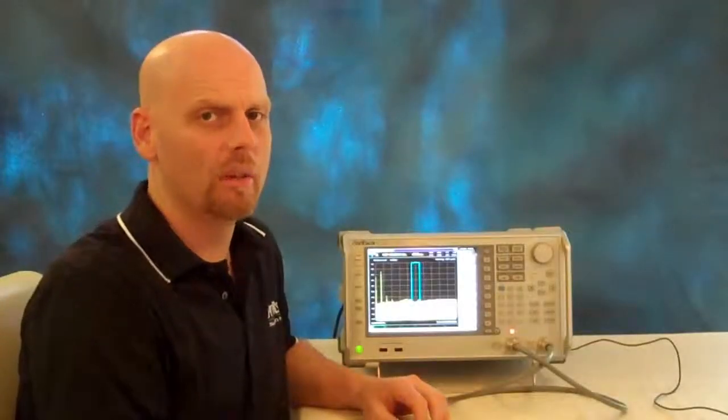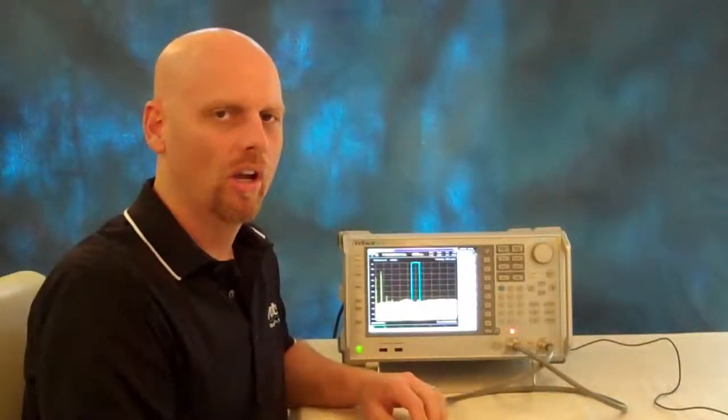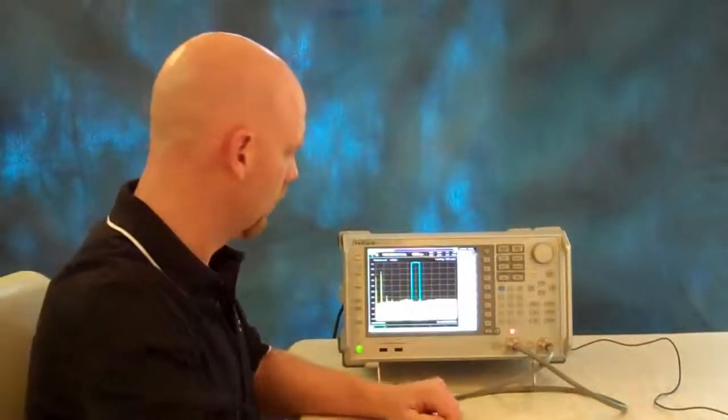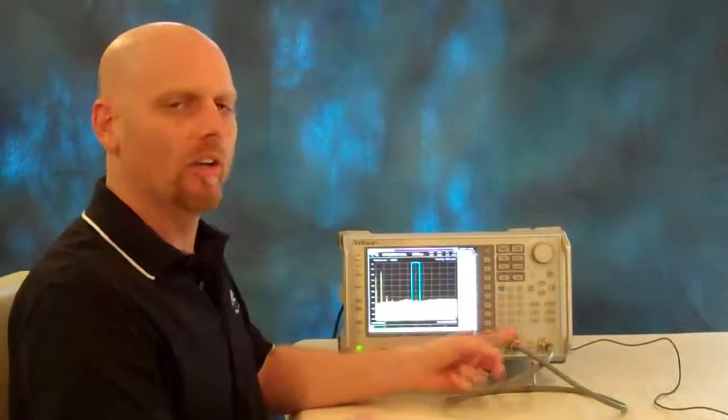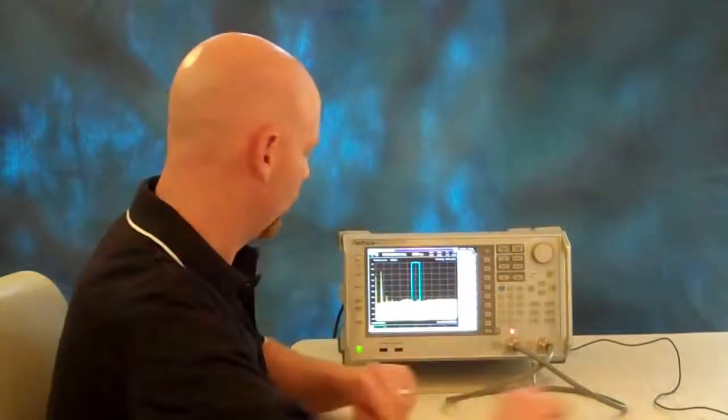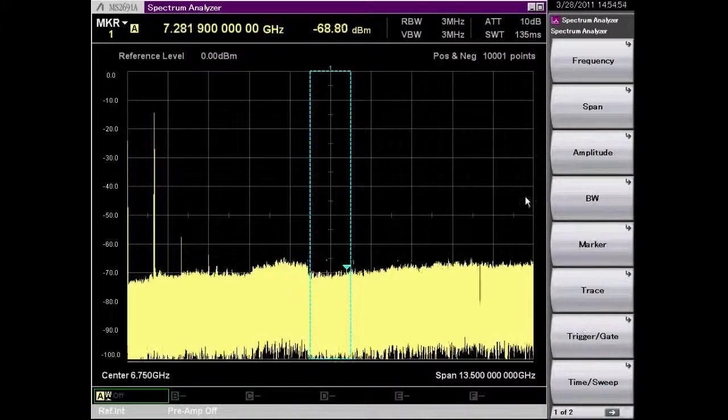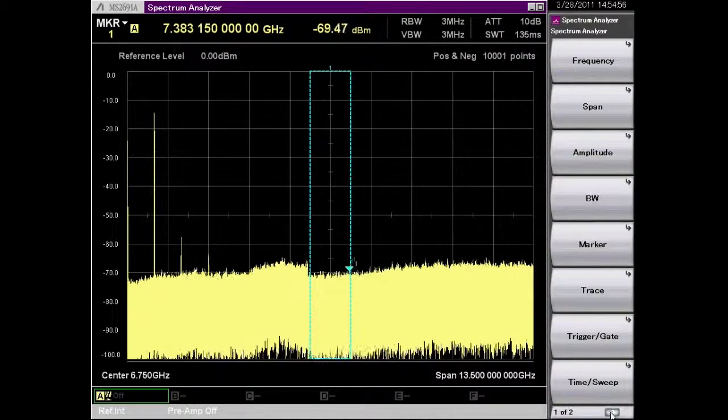Hello. Today I'm going to demonstrate the Spurious Emission feature on the MS2691A Spectrum Analyzer. I'm going to use my internal generator as a source. So the first thing that I need to do in the Spectrum Analyzer is go to the Measure option.